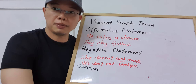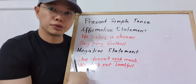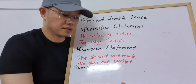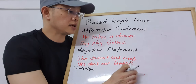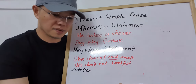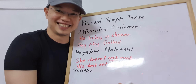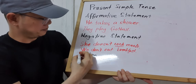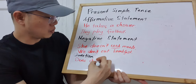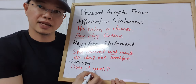Next, let's look at how to make a question. Same rule: for a singular subject, use 'does' and the main verb is in the base form. For a plural subject, use 'do' and the main verb is still in the base form. For example: 'Does it work?' — 'does' because your subject is 'it,' and 'work' is in the base form.